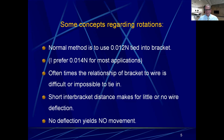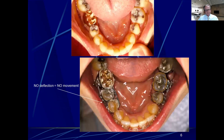Sometimes the relationship of the bracket to the wire is difficult or impossible to tie in, so you can't affect any correction because you have no deflection. A typical situation is a short interbracket distance — like between lower incisors — which makes for little or no wire deflection. The flexibility of any object, as you know from Young's modulus of elasticity or flexural rigidity, depends on the span of the wire, the diameter of the material, and what the material is made of. If you can't make any deflection, you're going to have to use your head and do something different.